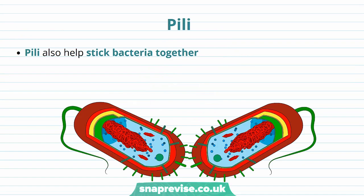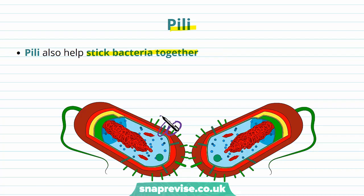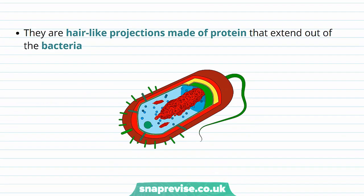Another structure found in some prokaryotes is the pili, which also help stick bacteria together just like the waxy capsule does. Pili are hair-like projections made of protein that extend out of the bacteria into its surroundings, and they can help link to other cells in a connecting way.